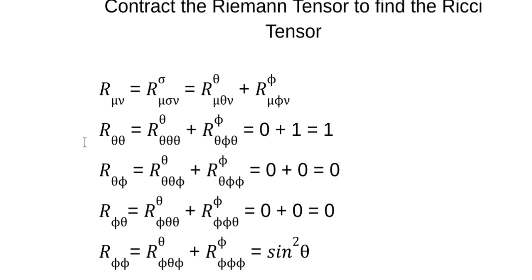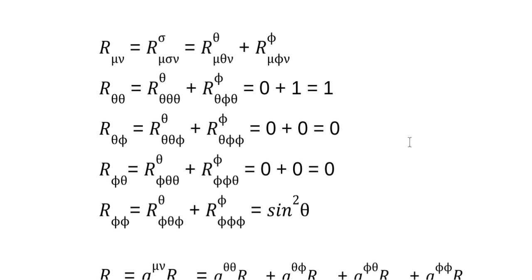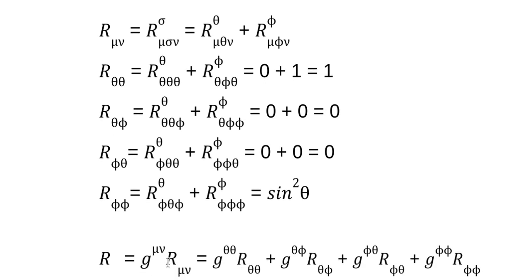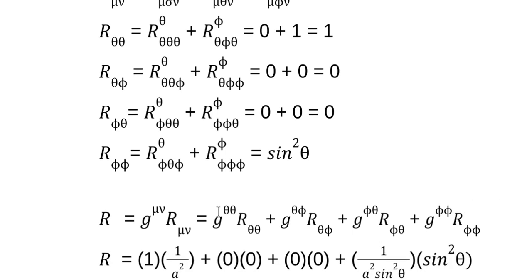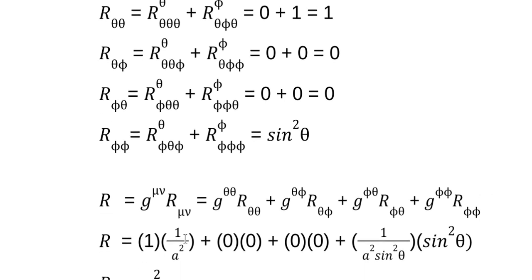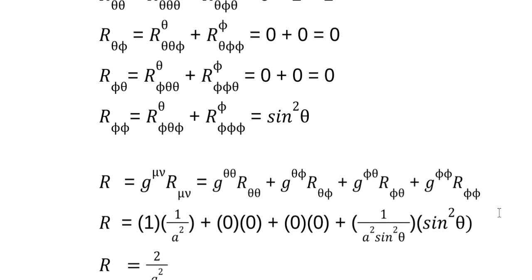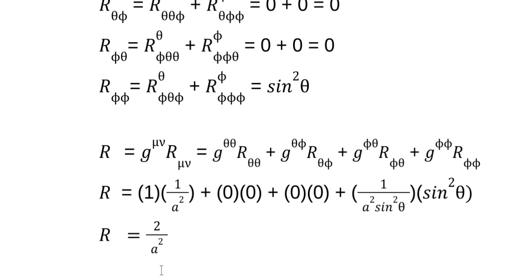Now we can use the Ricci tensor components to find the Ricci scalar, and we do that in a similar fashion. We want to contract a two-index tensor to a zero-index tensor — a scalar — and we do that by multiplying by the components of the inverse metric tensor. So we sum over mu and nu: g^(theta,theta) R_(theta,theta) + g^(phi,phi) R_(phi,phi), plus the off-diagonal terms which are zero. We plug in our numbers and we wind up with 2/a². That's the Ricci scalar: 2/a². Yeehaw! Now what do we do? That's the subject of the next video — homework assignment.